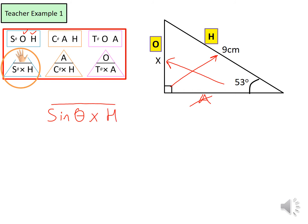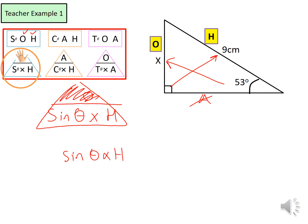Write down: sine θ × hypotenuse over opposite. The one we are trying to work out is the opposite, so we cover it and we get sine θ times the hypotenuse. Substituting our values: sine 53° multiplied by the hypotenuse of 9, that gives an answer of 7.2 centimetres to one decimal place.